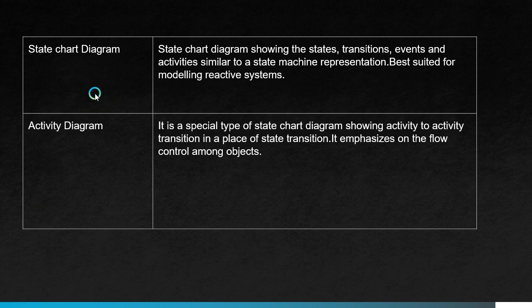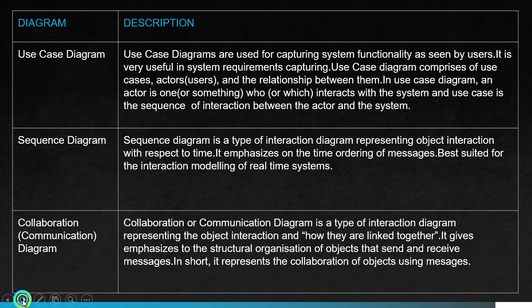The state chart diagram shows states, transitions, events, and activities when an object moves from one state to another. The activity diagram is a special type of state chart diagram showing activity-to-activity transitions in place of state transitions. It emphasizes the flow of control among objects — showing changes when an element moves from one activity to another.